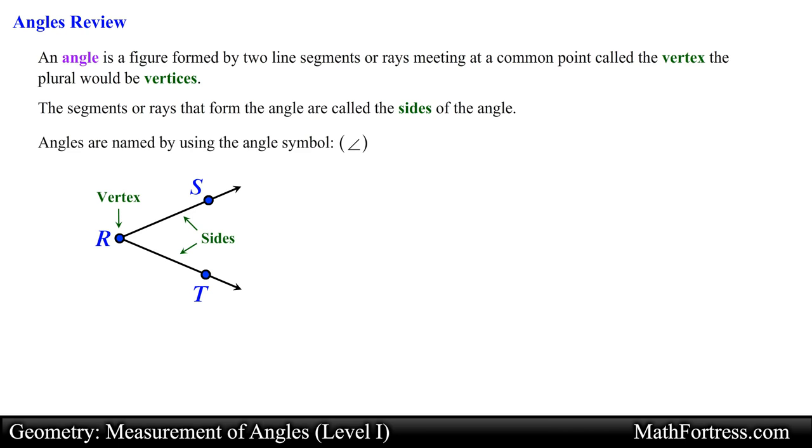Angles are named by using the angle symbol. You can name an angle in a couple of ways: we can use a vertex, we can use a point located on each ray or line segment and the vertex, or we can also use a single number.